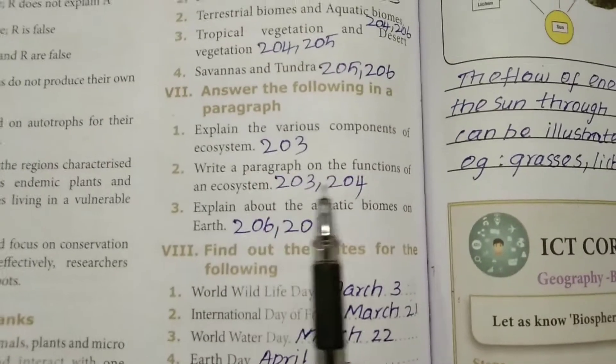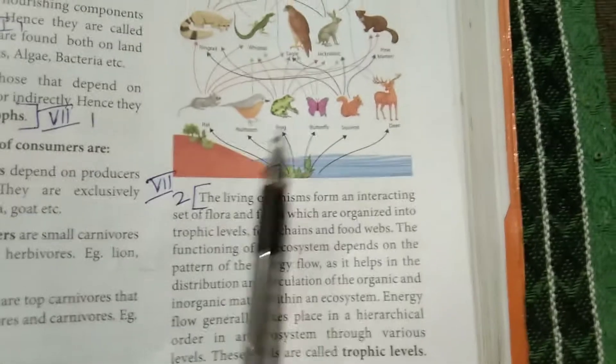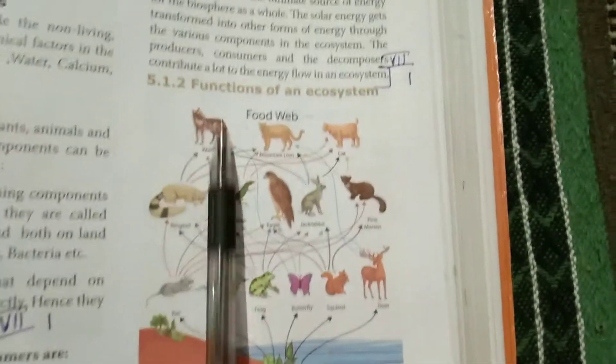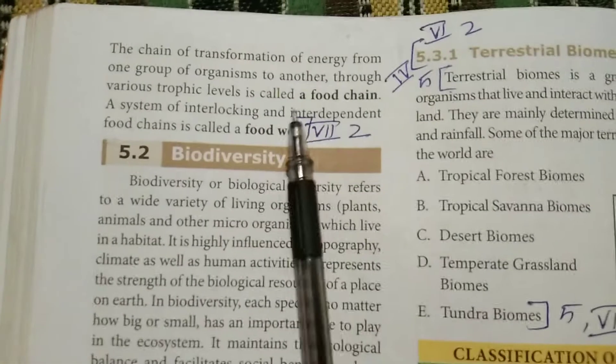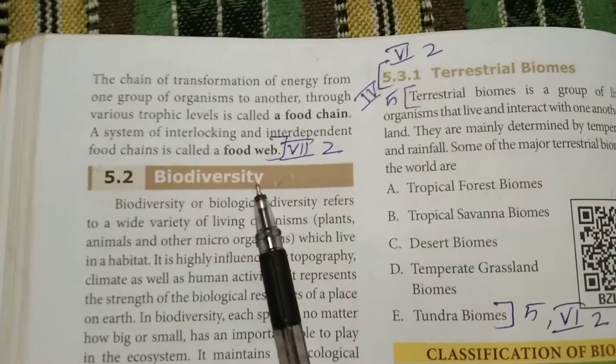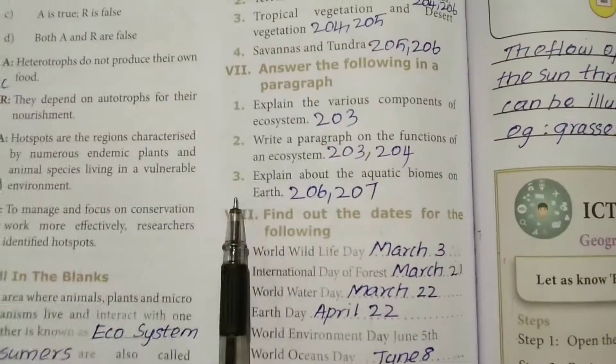Second paragraph question: write a paragraph on the functions of an ecosystem. Page number 203. Under the functions of the ecosystem heading, start that paragraph continuing to the next page, and include the food web section.